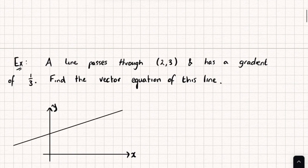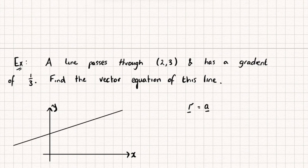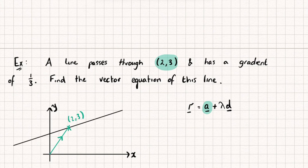Let's start with this example where we have a line that passes through the point (2, 3) and has a gradient of one third, and we're asked to find the vector equation of this line. The vector equation says that any point r on our line equals some vector a that gets us onto the line, plus some scalar multiple of the direction vector — a vector parallel to our line used to reach any other point on it. We know the point (2, 3) is on the line, so we travel along the vector (2, 3) to get onto the line. Our equation is going to be (2, 3) plus some scalar multiple of the direction vector.